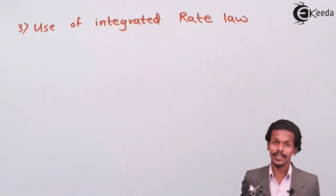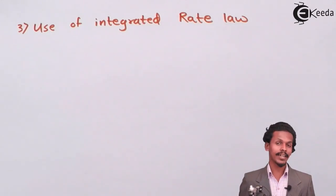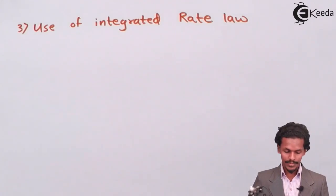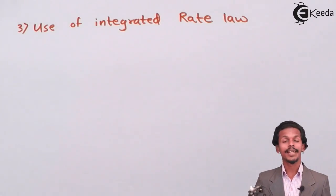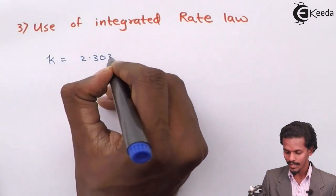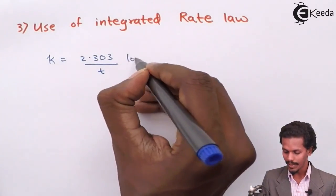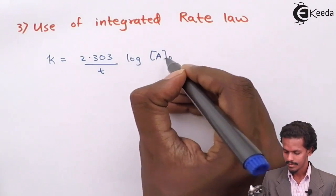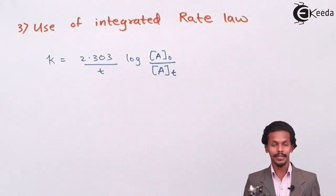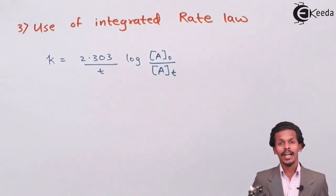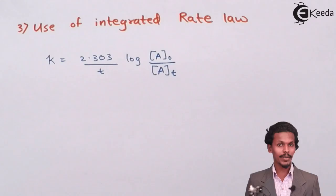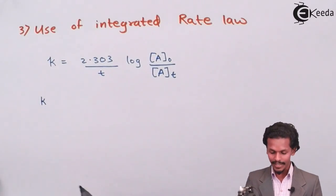Now moving towards the next method — the use of integrated rate law. We can determine the order of a reaction using this approach. Suppose we know the rate constant formula for a first-order reaction: K equals 2.303 divided by T times log base 10 of A0 over A. This equation can be represented as a straight-line graphical form.